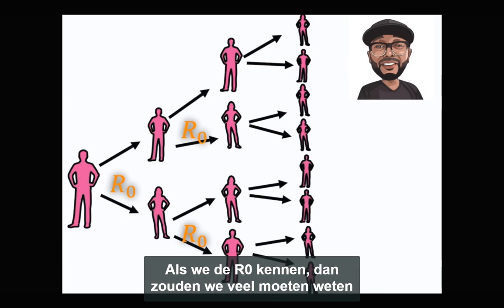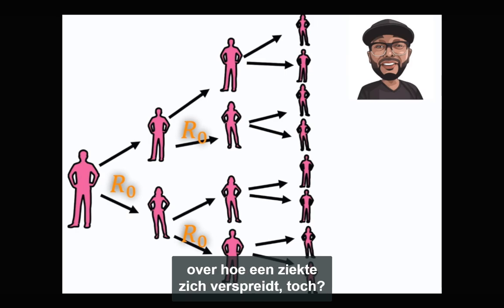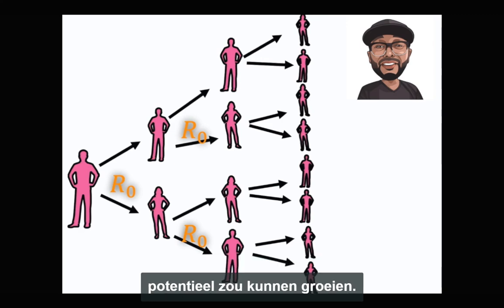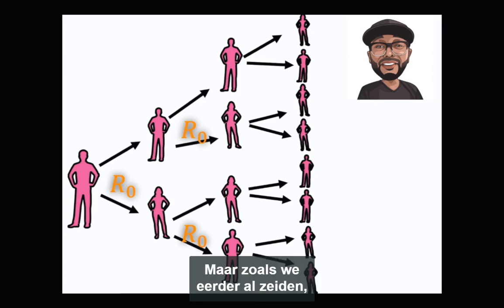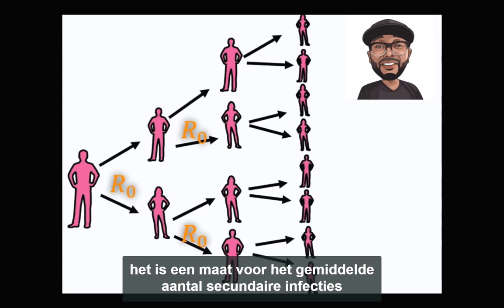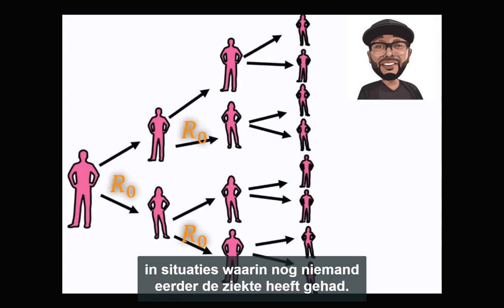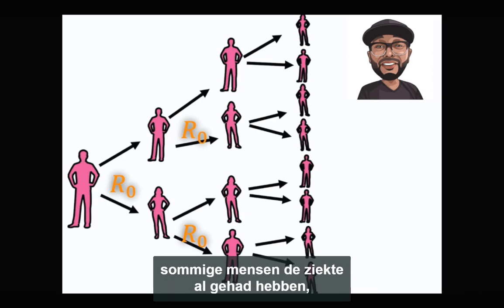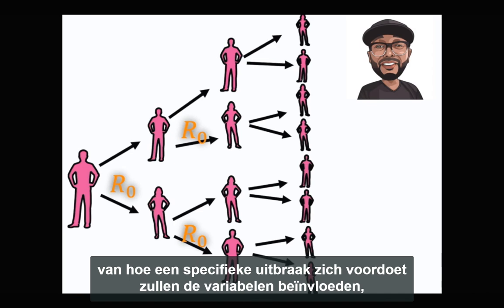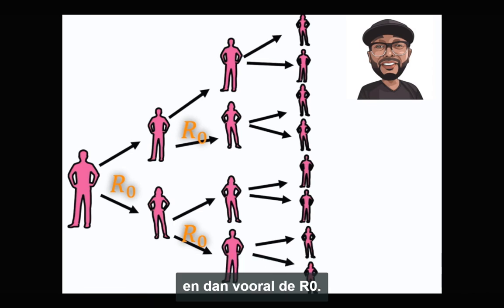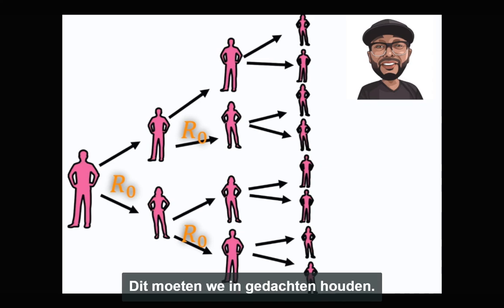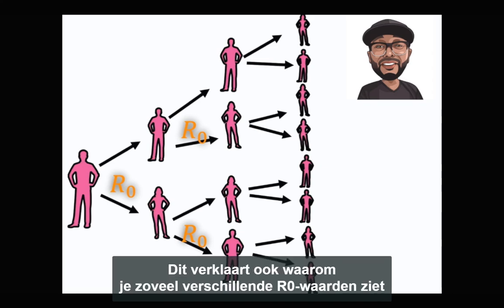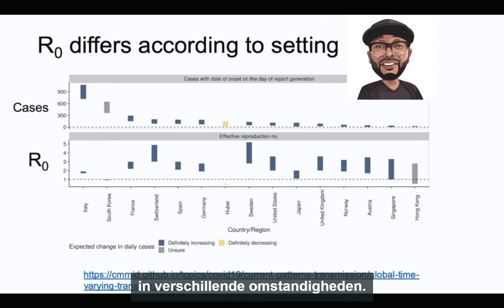If we know the R0, then we should know a lot about how a disease is spread, right? The R0 is super important because it describes the potential for how fast an epidemic can grow. But like we mentioned earlier, it describes the average number of secondary infections in scenarios where no one has previously had the disease. In many situations, some individuals have already had the disease, and so the R0 isn't so predictive. It is not set in stone, and many features of how an outbreak plays out will influence these numbers, and especially the R0. We must be mindful of this, and this explains why you see varying R0 values in so many different settings.